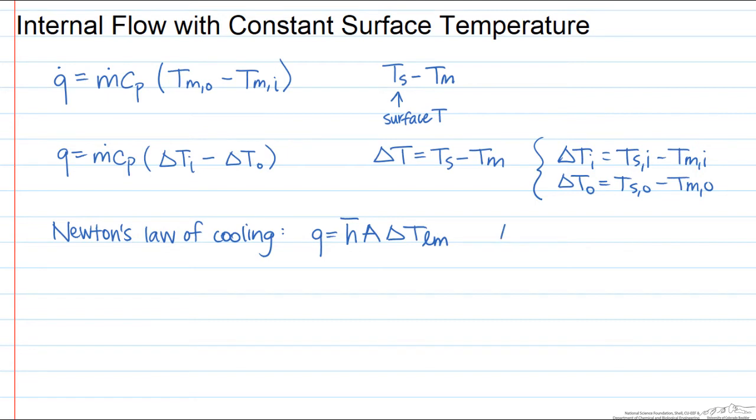Where that delta T log mean is equal to delta T out minus delta T in, where again these are with respect to the surface temperature, divided by the natural log of delta T out over delta T in.